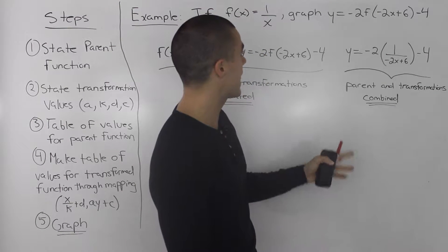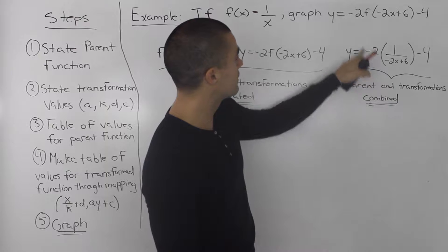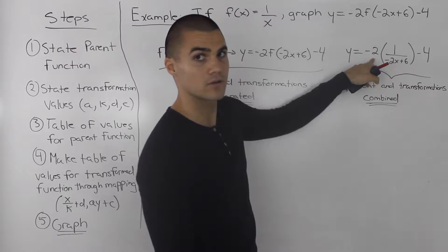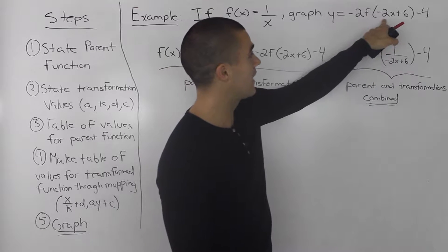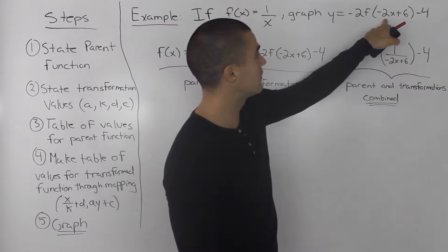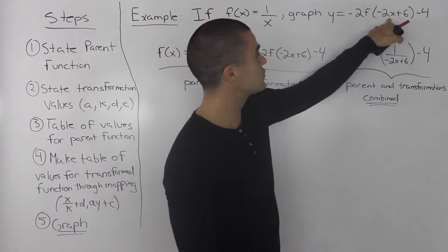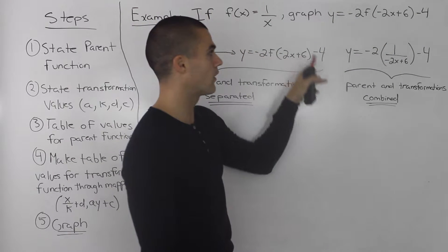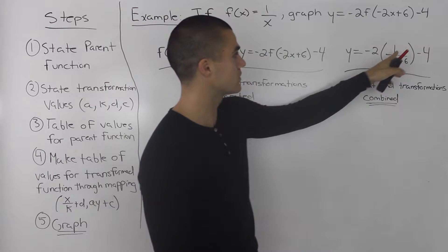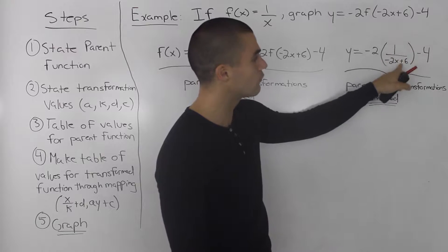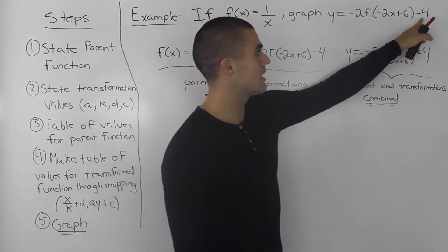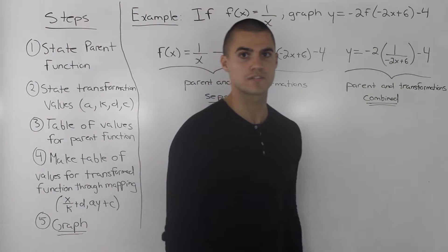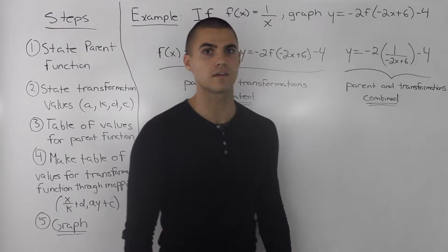So if that were to happen, then the negative 2 — the a value — would be outside, and then the negative 2x plus 6 we would sub in for the x value in 1 over x. So here we have 1 over negative 2x plus 6, and then the c value of minus 4 would still be on the outside.